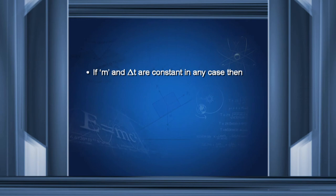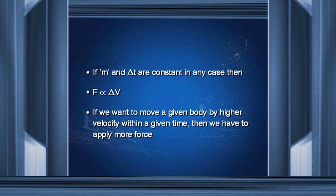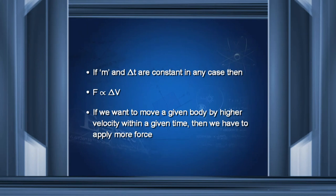If mass M and delta T are constant, then force is directly proportional to change in velocity. This means if we want to move a given body to a higher velocity within a given time, we have to apply more force. For example, with a bicycle — to move it at 5 meters per second in a given time requires some force, but to move it at 10 meters per second in the same time requires comparatively larger force.